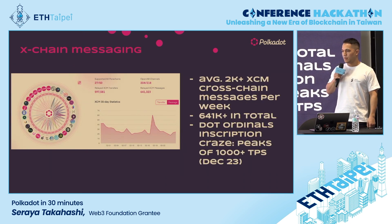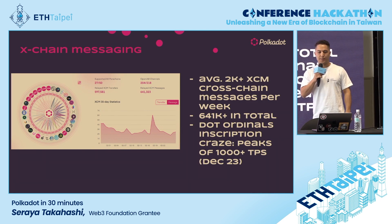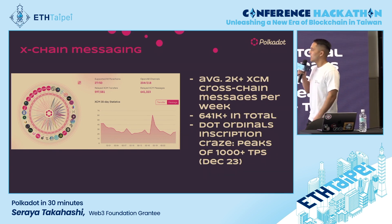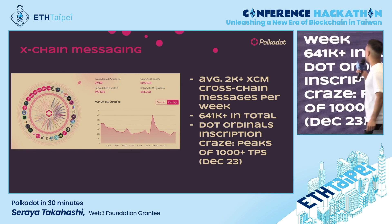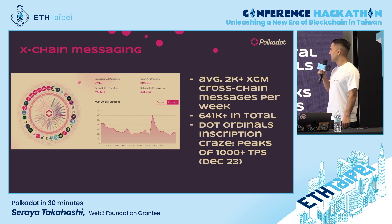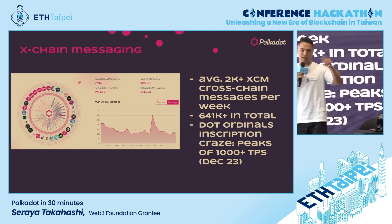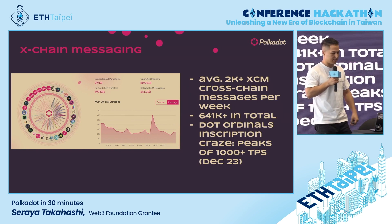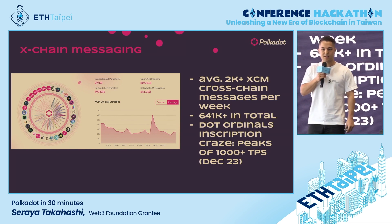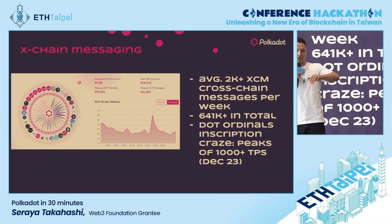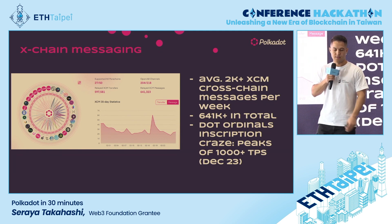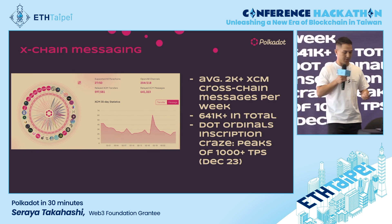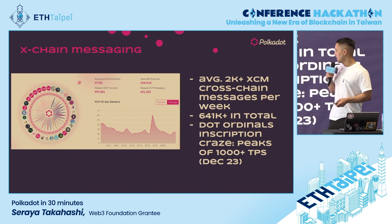Another thing you can do on Polkadot is cross-chain messaging. We have a format called XCM. Currently we have an average of 2,000 transactions per week, and there have been over half a million transactions in total sent back and forth between different parachains and the relay chain. These parachains do very different things — DEXs, Bitcoin integration, DeFi, real-world assets, DIDs, and fundraising platforms — all kinds of different projects on this network.